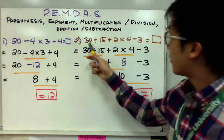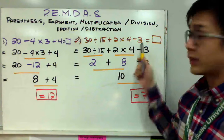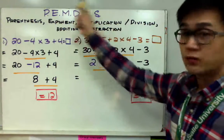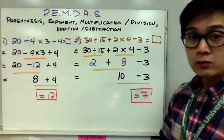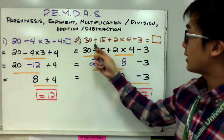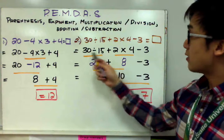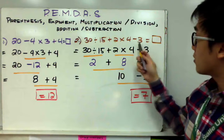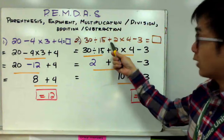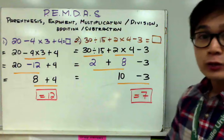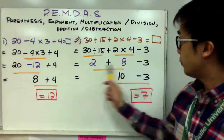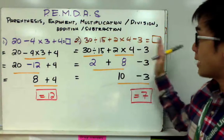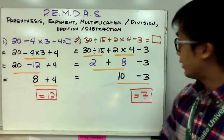For number two, I have 30÷15+2×4-3. This example has division, addition, multiplication, and subtraction, so we use PEMDAS. First, I evaluate division and multiplication: 30÷15=2 and 2×4=8. I copy down the minus 3 and the plus sign. Now on the second step I use the left-to-right method since it's just addition and subtraction: 2+8=10, and 10-3=7. Don't use left-to-right for this problem from the start, or your answer will not be 7.